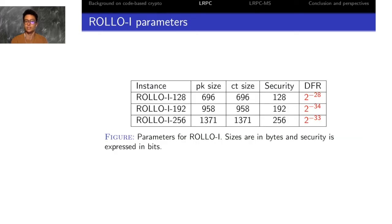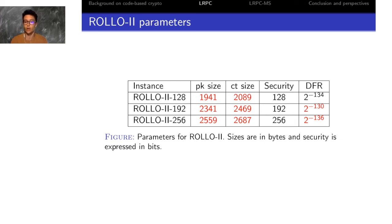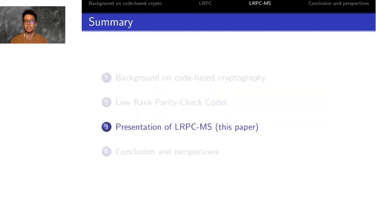With that idea, there is the ROLO1 cryptosystem which has really efficient parameters, but the DFR is high because of the formulas that I presented on the decoding failure rate in the previous slides. If you want to decrease the decoding failure rate up to the level of security, then you need to increase the parameters as presented in the ROLO2 parameters. The objective of our new cryptosystem LRPC with multiple syndromes is to get the same level of DFR as ROLO2 but with better parameters.